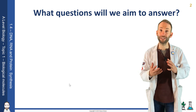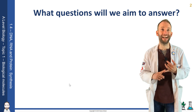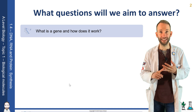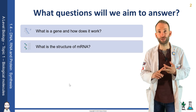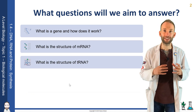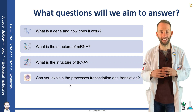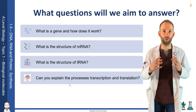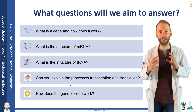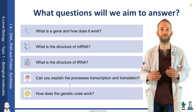So more specifically, in this lesson, you're going to cover what a gene is and how it works. We're going to look at the structure of messenger RNA and the structure of transfer RNA, and we're going to explain the processes of transcription and translation, which is essentially protein synthesis and what DNA is used for. And then we're going to learn specifically about the genetic code and how that code actually works.